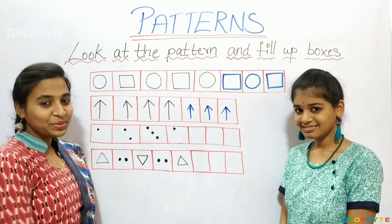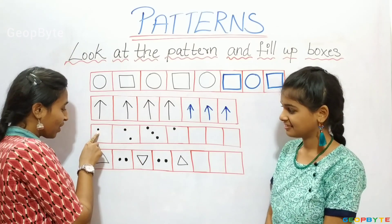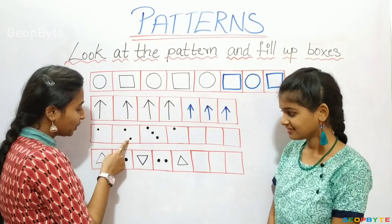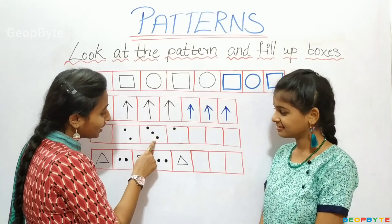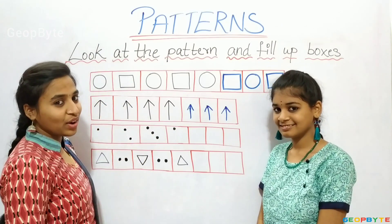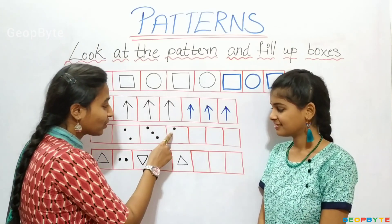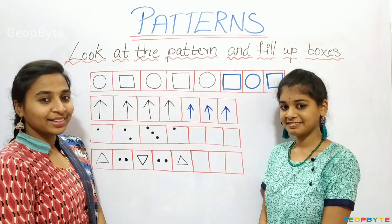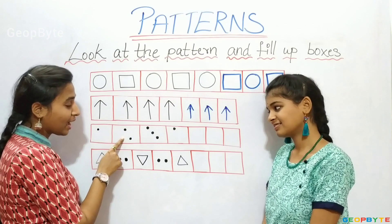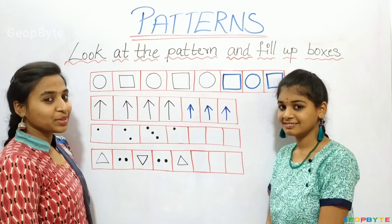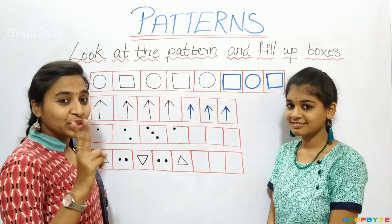Now, see kids. I have a pattern. One dot. One, two — two dots. One, two, three — three dots. So again I have two dots, and again I have one dot. After this, which dot will I get here? See kids: after one dot, I have two dots. So here also, after one dot, I will get two dots.